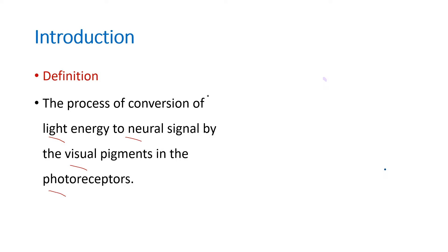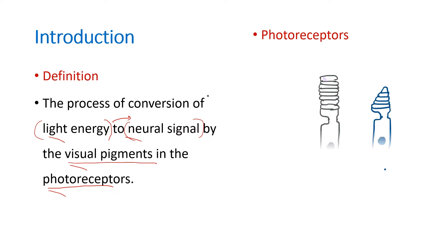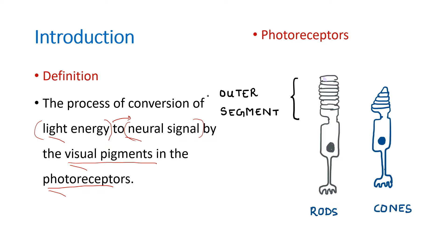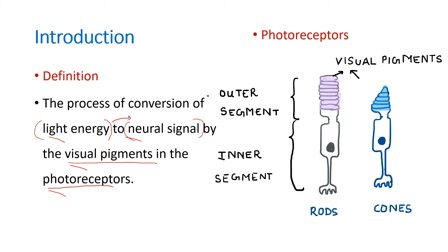So phototransduction is a process of conversion of light energy to neural signals. Light falling onto our eyes is converted to neural signals by the visual pigments present on the photoreceptors. The photoreceptors in our eyes are the rods and the cones. These rods and cones have an outer segment and an inner segment and they contain visual pigments, which convert light into neural signals — that process is known as phototransduction.